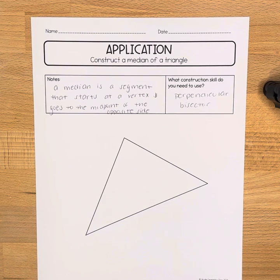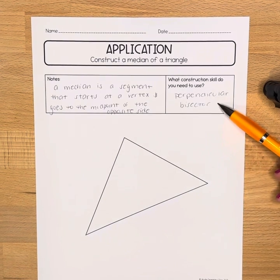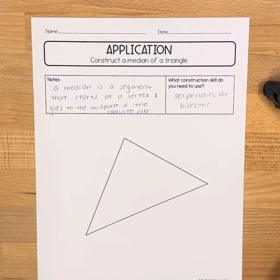So the key thing we need to do here is find the midpoint of a side and we're going to use the perpendicular bisector construction in order to do so.